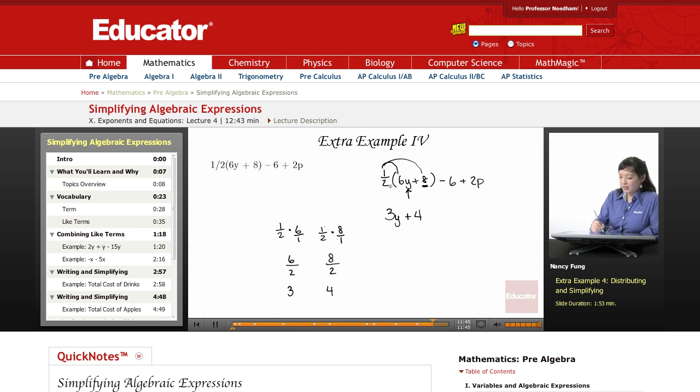Now I'm going to recopy everything because we're done with the distributing: minus 6 plus 2p. Now let's go through and collect our like terms. Well, I see a 4 and a negative 6. And that's it for like terms, because these variable factors do not match.